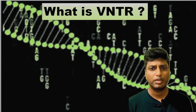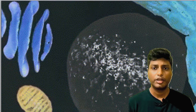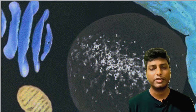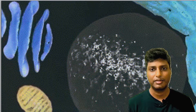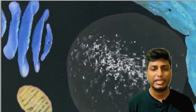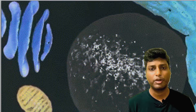What is exactly VNTR? To understand the concept of VNTR, let's go to the basics. If you observe the cell, there are different types of organelles inside the cell, like Golgi apparatus, mitochondria, etc. One of the most important organelles inside the cell is the nucleus, which is sometimes called the brain of the cell. The nucleus is so important because it contains the genetic information present inside the chromosomes.